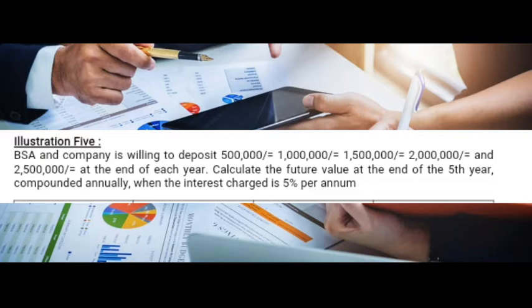BSA and Company is willing to deposit 500,000, 1 million, 1.5 million, 2 million, and 2.5 million shillings at the end of each year. Calculate the future value at the end of the fifth year, compounded annually, when the interest rate is 5% per annum. So our n is 5 and our interest rate is 5%.